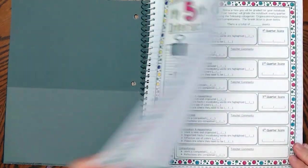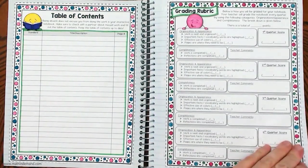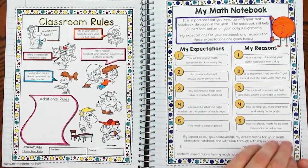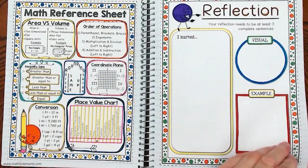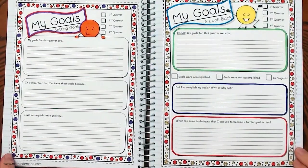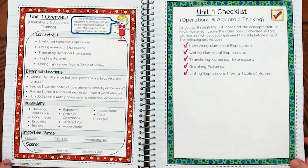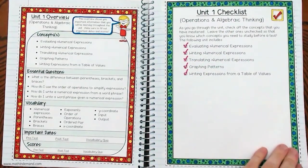Each notebook comes with a table of contents, grading rubric, classroom rules, notebook expectations, math reference sheet, reflection, setting goals, and a look back at goals. Each unit has an overview that goes over important information and there is also a checklist.